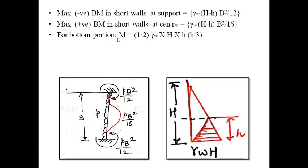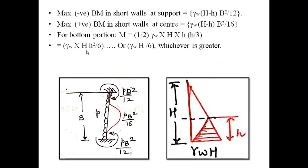For the bottom portion — that is H', which is H/4 or 1 meter whichever is greater — the bending moment is calculated by considering the triangular pressure diagram for the cantilever. It is ½ × γw × H' × H' × H'/3, which simplifies to γw × H' × H'² / 6, or γw × H'³ / 6. This bottom portion acts as a cantilever for a height of H' equal to H/4 or 1 meter whichever is greater.